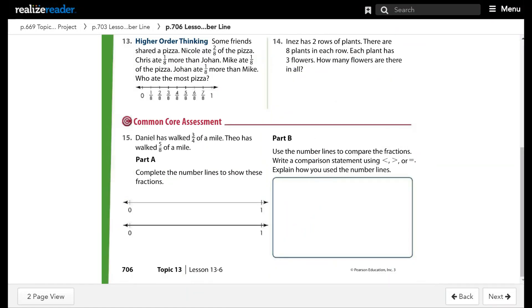Let's move to the next page, page 706, question number 15. Daniel has walked 3 over 4 of a mile. Tiwo has walked 5 over 8 of a mile. Part A, complete the number lines to show these fractions. So the first one is out of 4 and the second one out of 8.